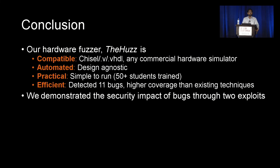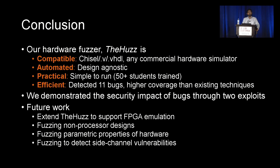In conclusion, we designed a new hardware fuzzer to detect bugs in processor designs called DHS. It is compatible — we can fuzz any HDL using any commercial hardware simulator, so it integrates with existing verification flows. It is automated, from input generation to detecting mismatches. It is practical and easy to use, efficient in detecting bugs in real-world processor designs, and achieves higher coverage than existing techniques. We demonstrated the security impact of bugs using two crafted exploits. Future work includes FPGA emulation, fuzzing non-processor designs, fuzzing for parametric hardware properties, and detecting side-channel vulnerabilities.